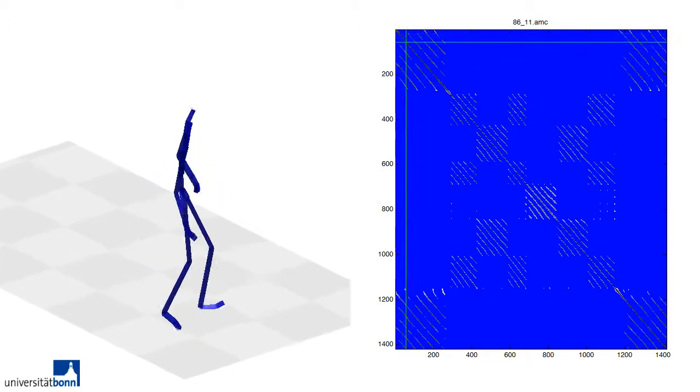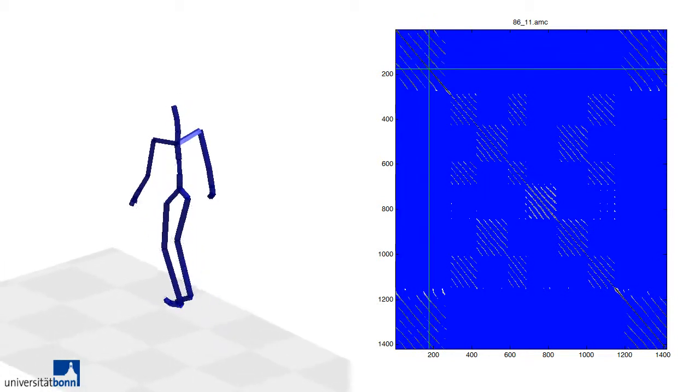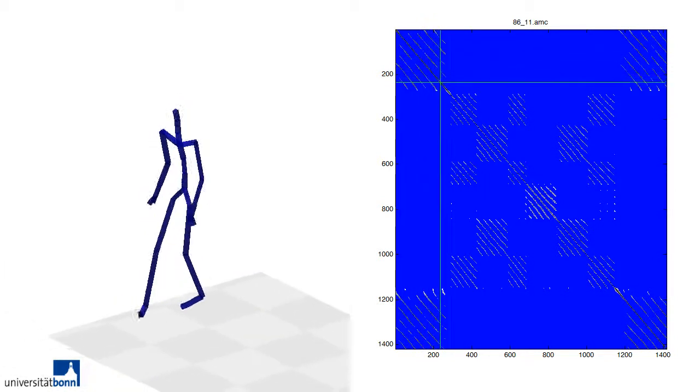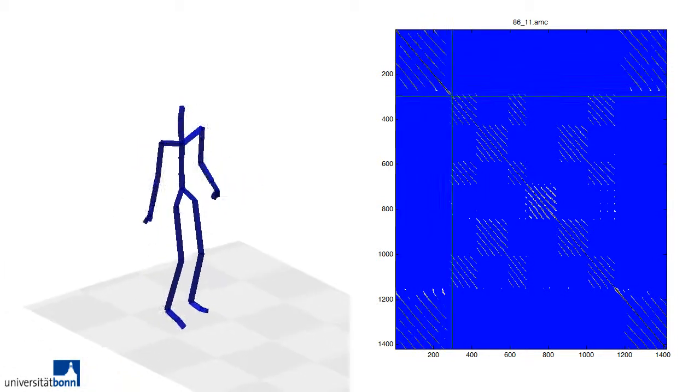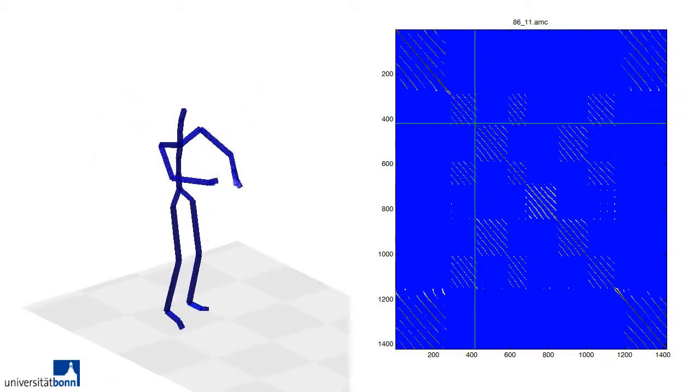The segmentation method introduced in this work as a first step extracts different activities from a sequence of human motion. In a second step, motion primitives, which are the essential parts of these activities, are detected.